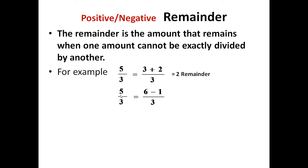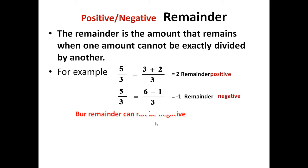Now, if we take another example, this 5 upon 3 again — we can write this 5 as 6 minus 1. It is also true, and this 6 is exactly divisible by 3. So, whatever is left, this is minus 1. So, remainder is minus 1. But we know remainder — this is the positive 1, and here it is a negative remainder.